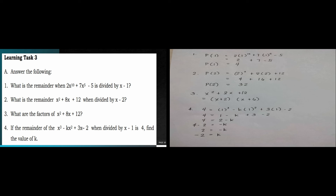For Learning Test 3, the first one: with x equals 1, we have 2 times 1 to the 10th plus 7 times 1 to the 5th minus 5, giving a remainder of 4. For number 2, with x equals 2, we have 2 squared plus 8 times 2 plus 12, which gives 32. For number 3, the factors of x squared plus 8x plus 12 are x plus 2 times x plus 6. To get the value of k: 4 equals 1 cubed minus k times 1 squared plus 3 times 1 minus 2, and evaluating this gives a negative value of k.